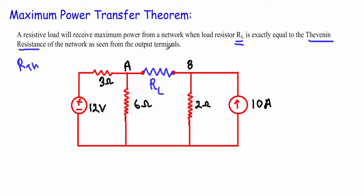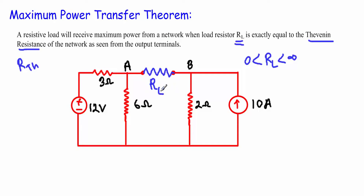Before describing this theorem further, let me show you a practical circuit. A resistor RL is connected between terminals A and B. The value of RL will be greater than zero but less than infinity.